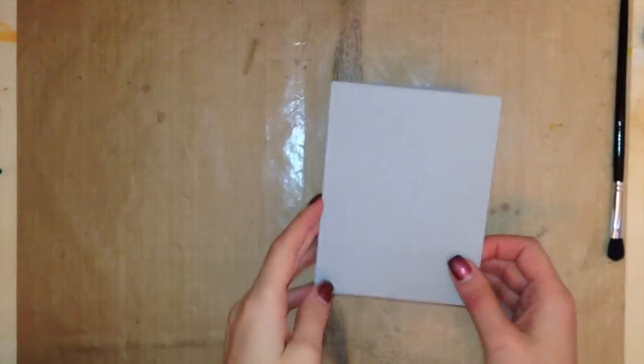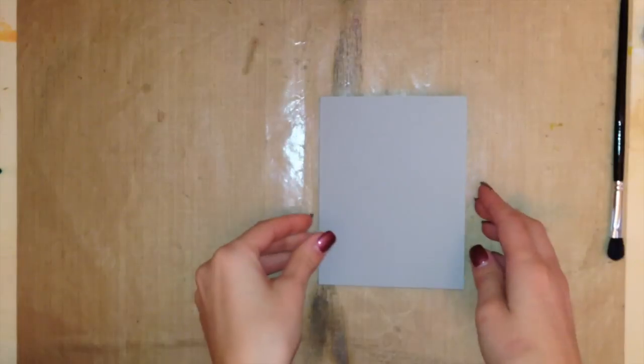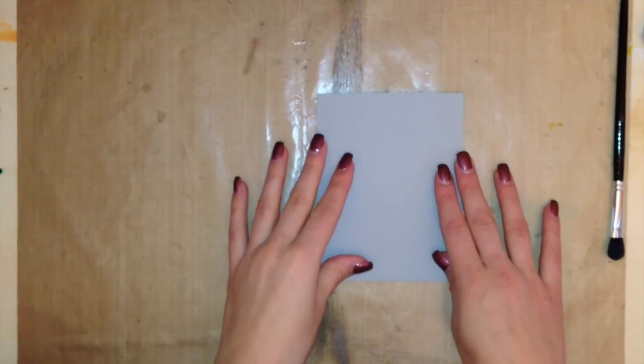We're going to start off by taking a card base out of the fog cardstock from Simon Says Stamp. It's measured at four and a quarter by five and a half inches long.